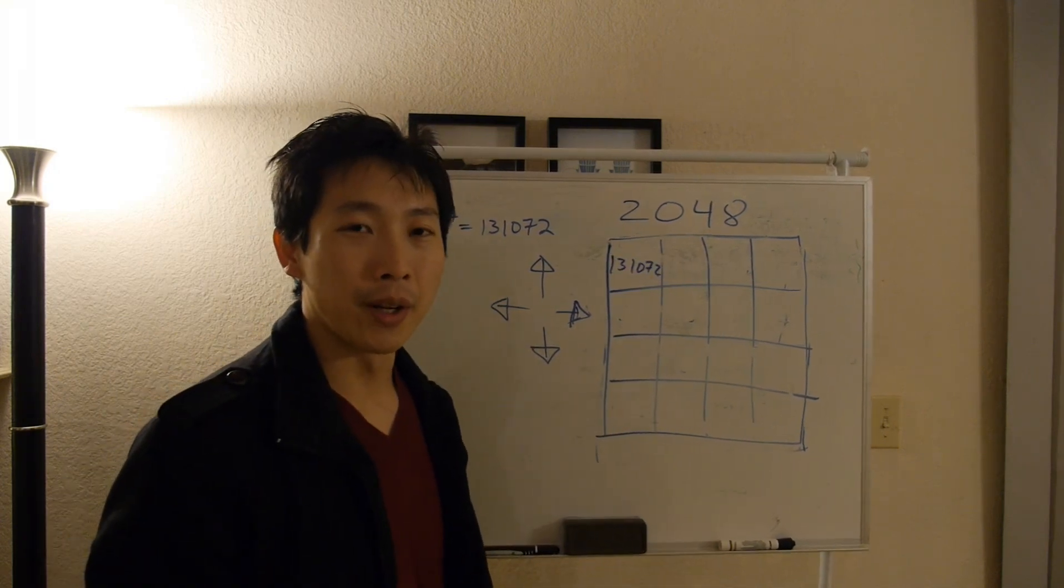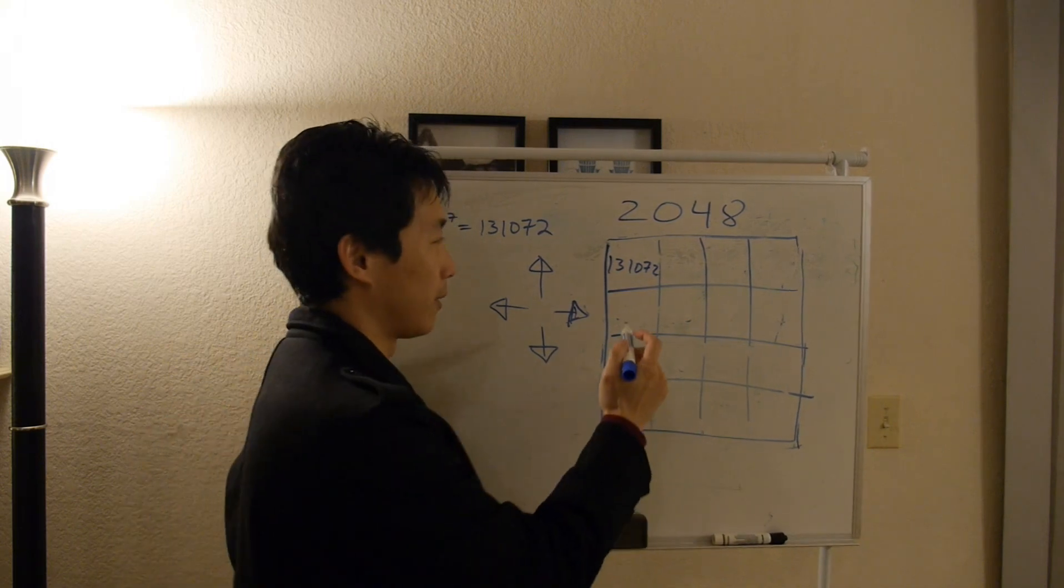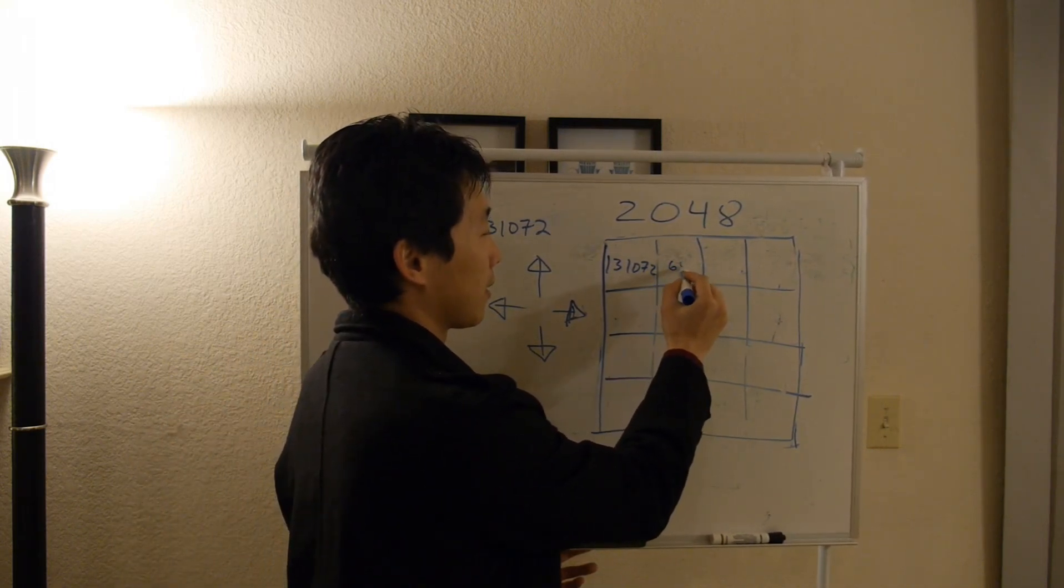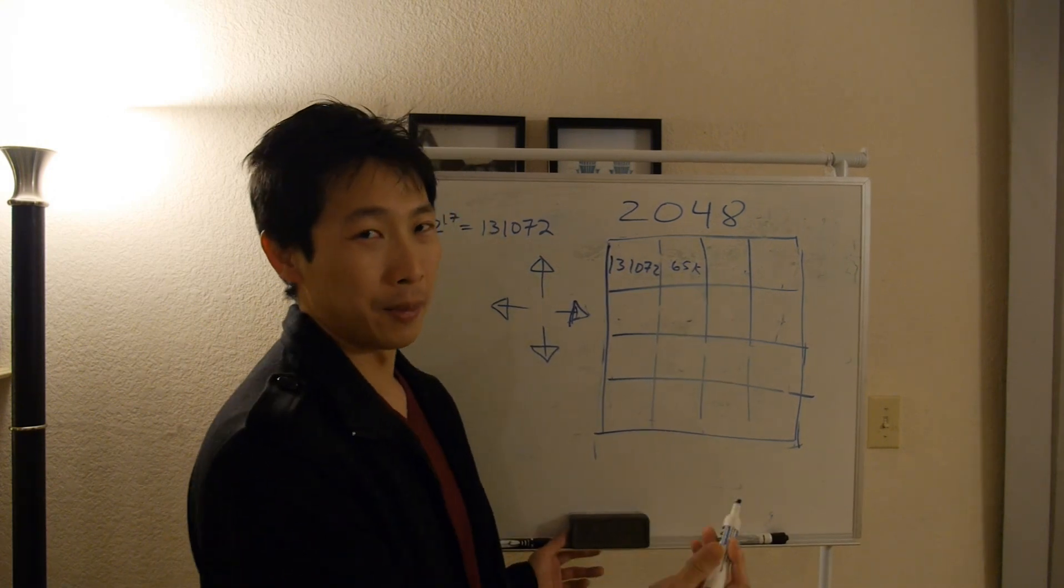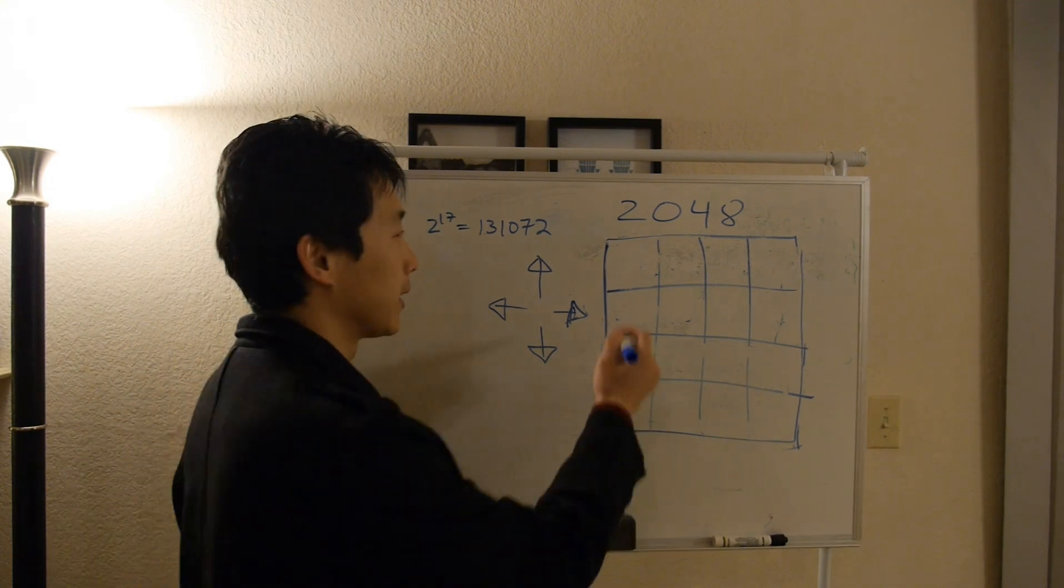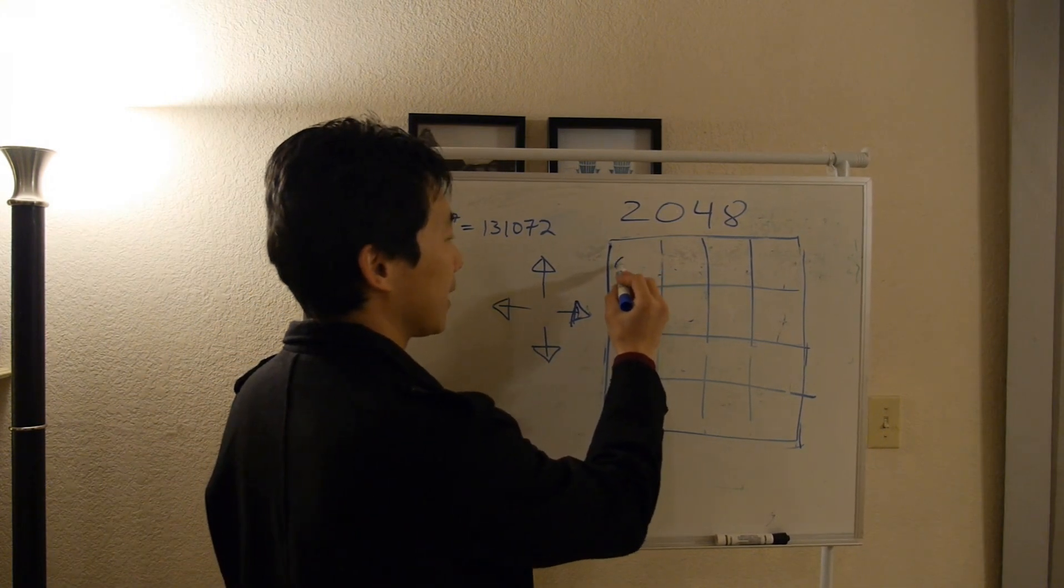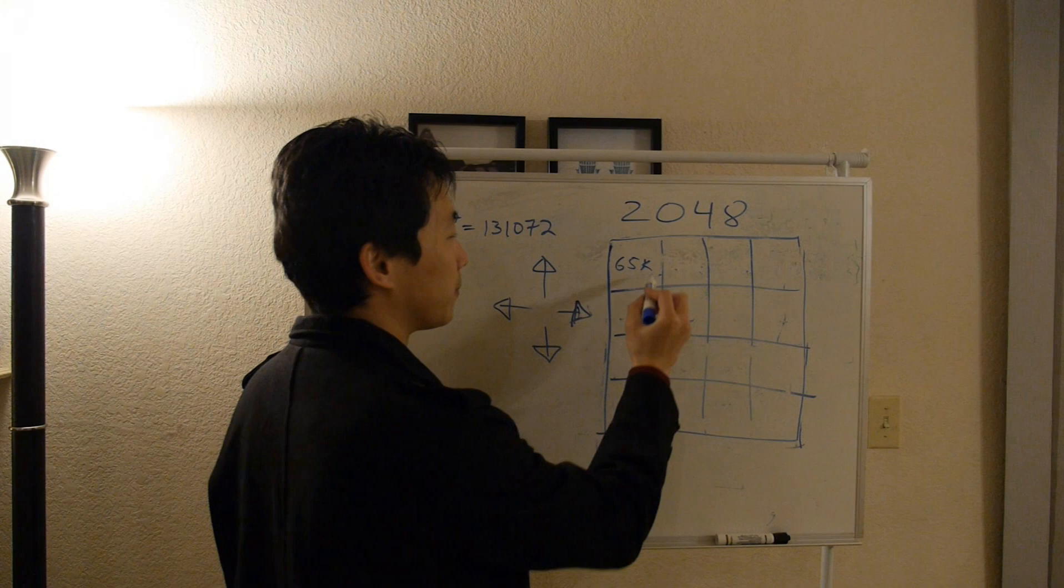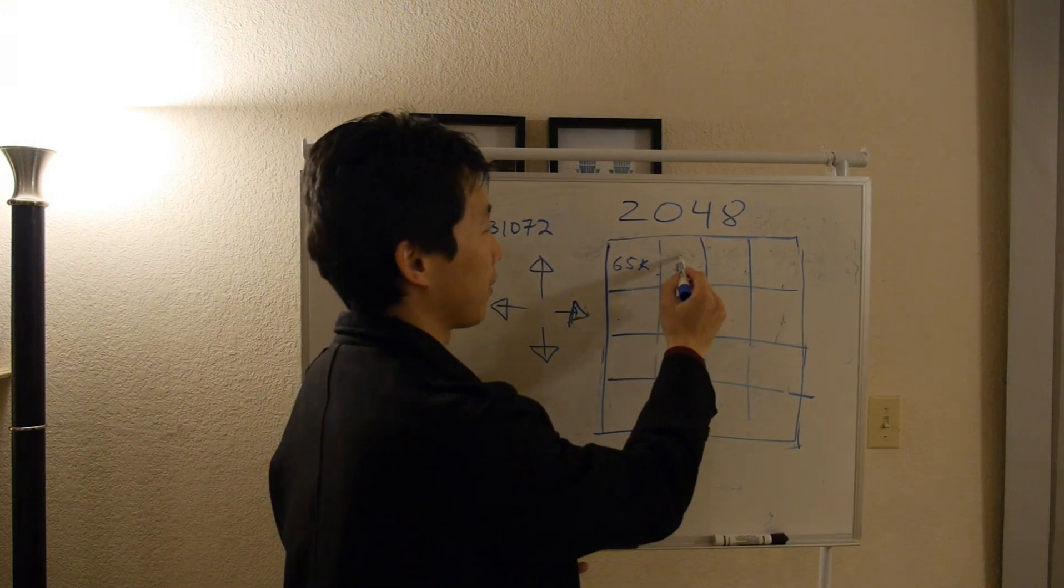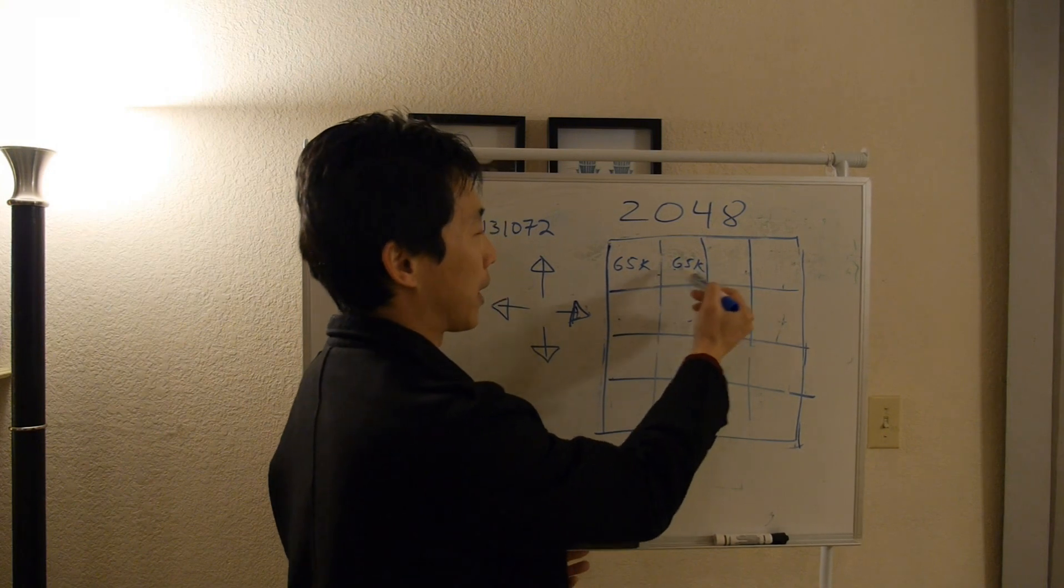So let's begin with the 131k tile. In order to get this tile, we must have had the 65k tile somehow before, right? In order to prove that the 131k tile can exist is that if you had the 65k tile, you must have had the 65k tile next to it, right? In order to combine.